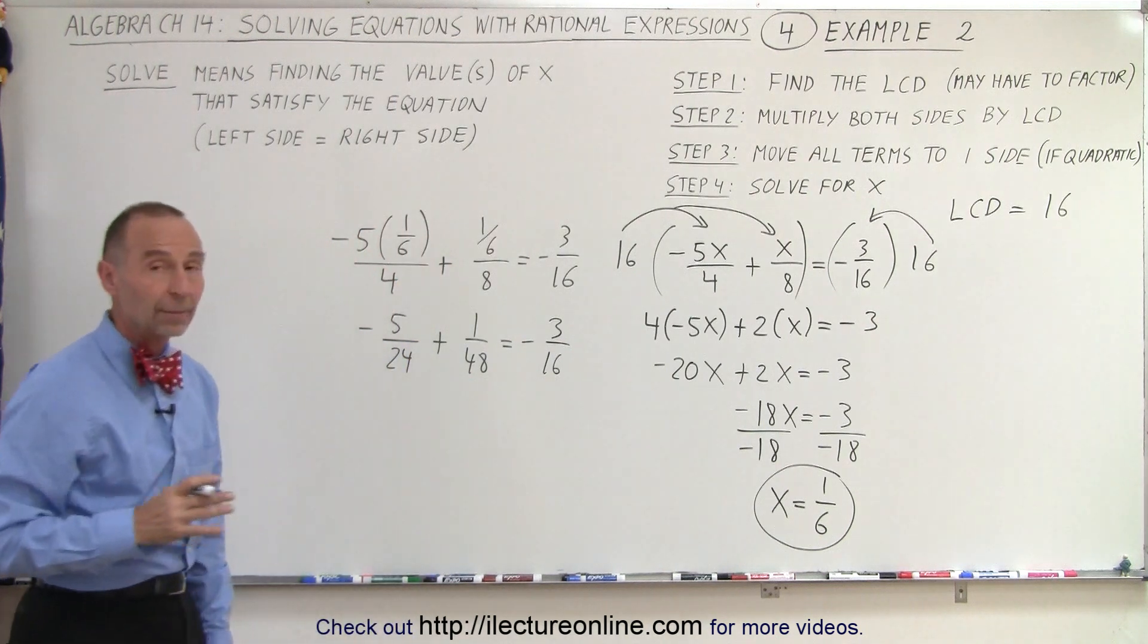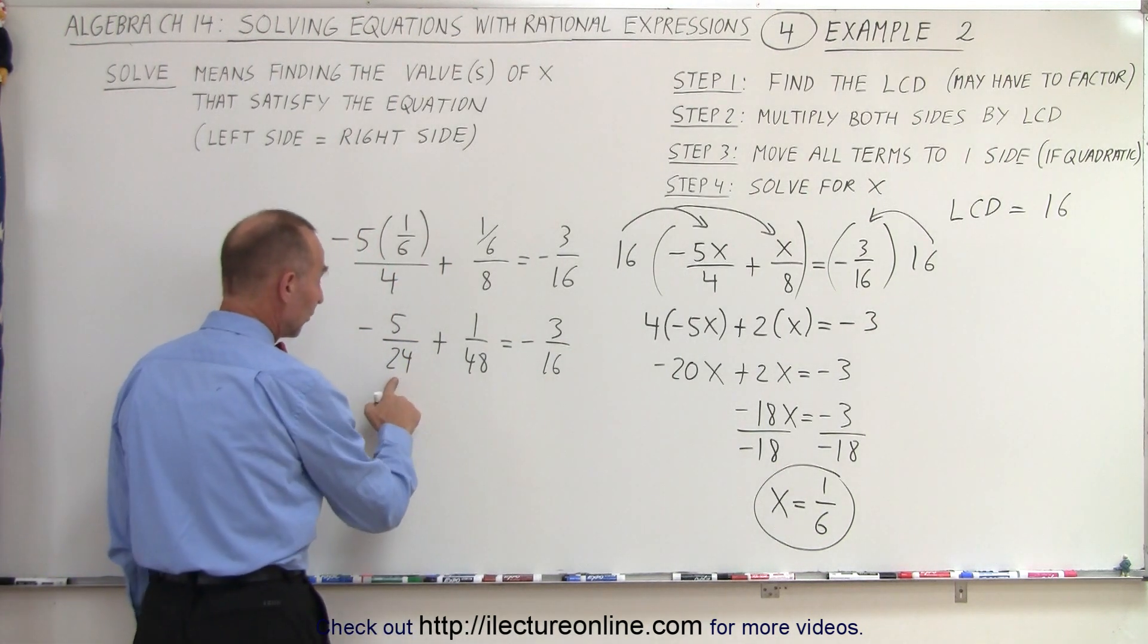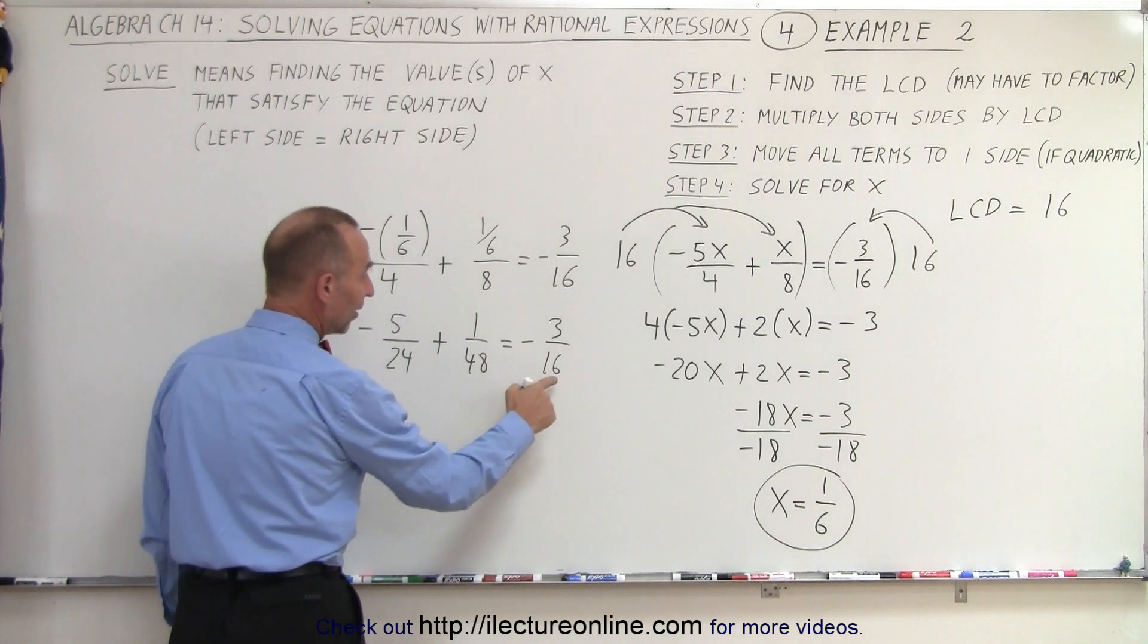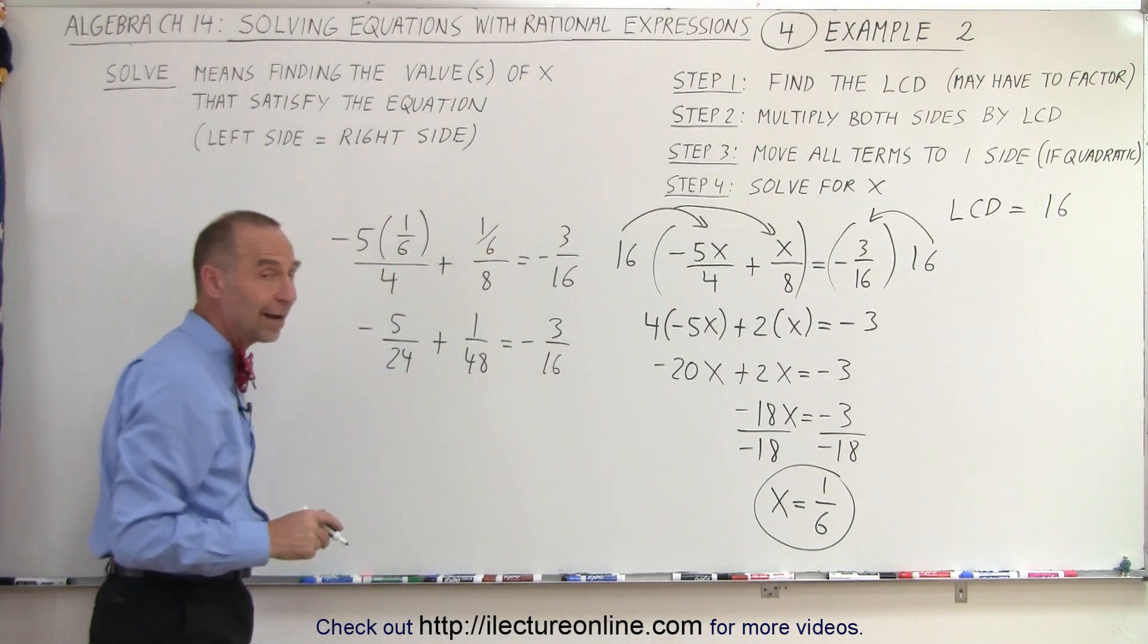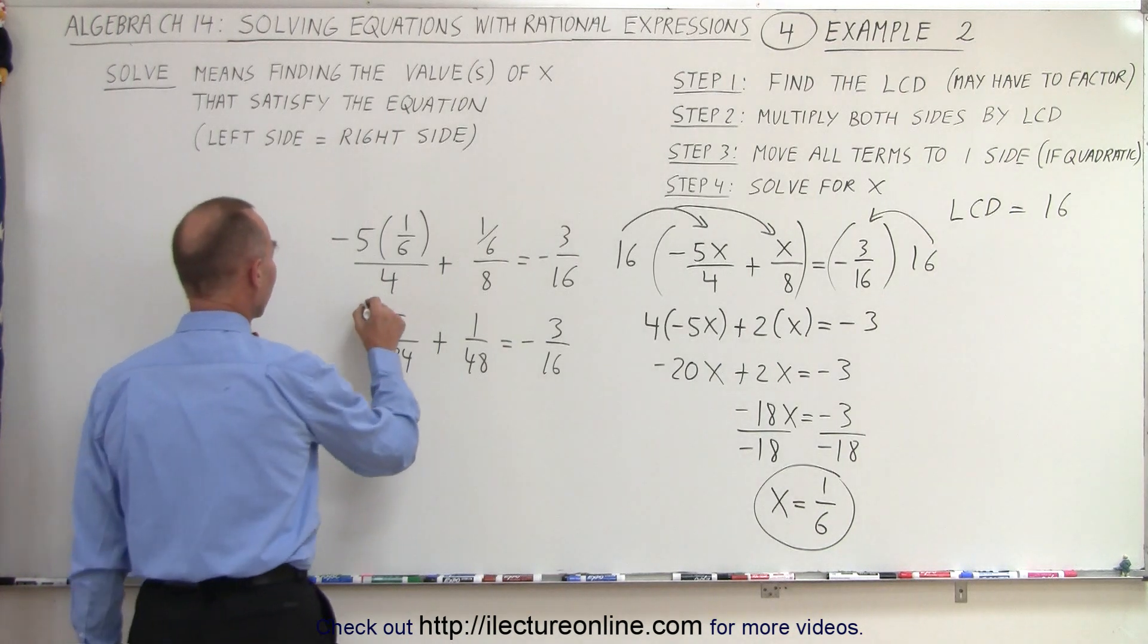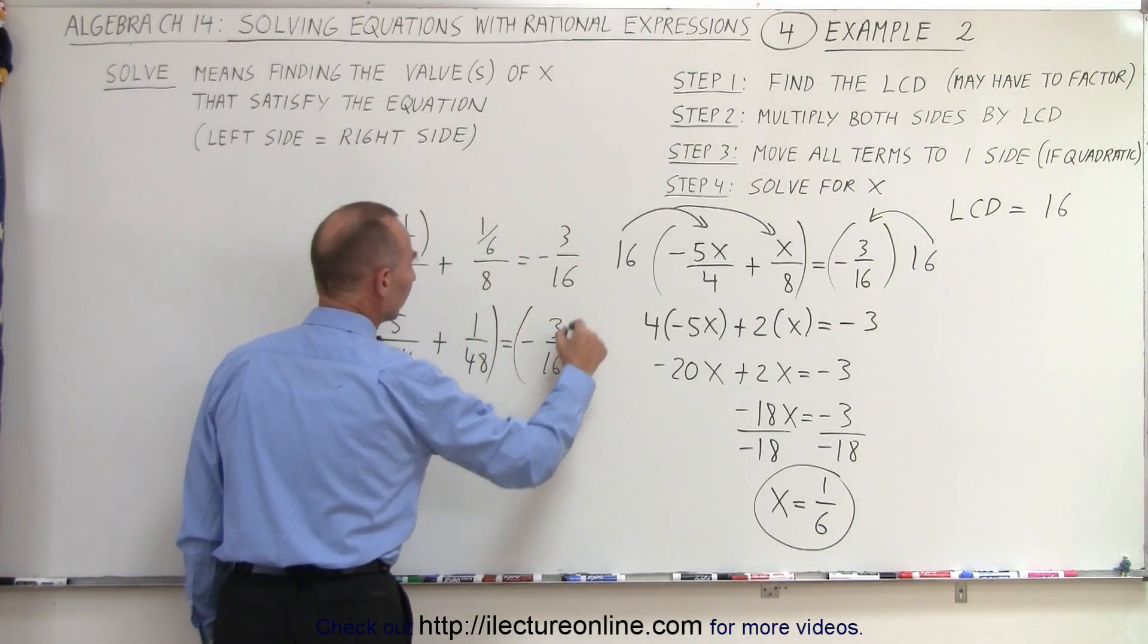Now notice the lowest common denominator in this case will be 48. 24 goes into 48 twice, and 16 goes into 48 three times. So now we're going to multiply both sides by the lowest common denominator, 48.